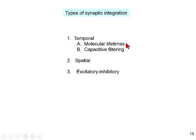There are several types of synaptic integration. There is temporal integration, which can be caused by molecular lifetimes or by the fact that the membrane is a capacitor that filters and spreads signals in time. Then there is spatial integration — the cable properties of dendrites play a role in how inputs sum. Finally, we can have integration of excitatory and inhibitory inputs, where inhibitory inputs prevent many excitations from reaching threshold.